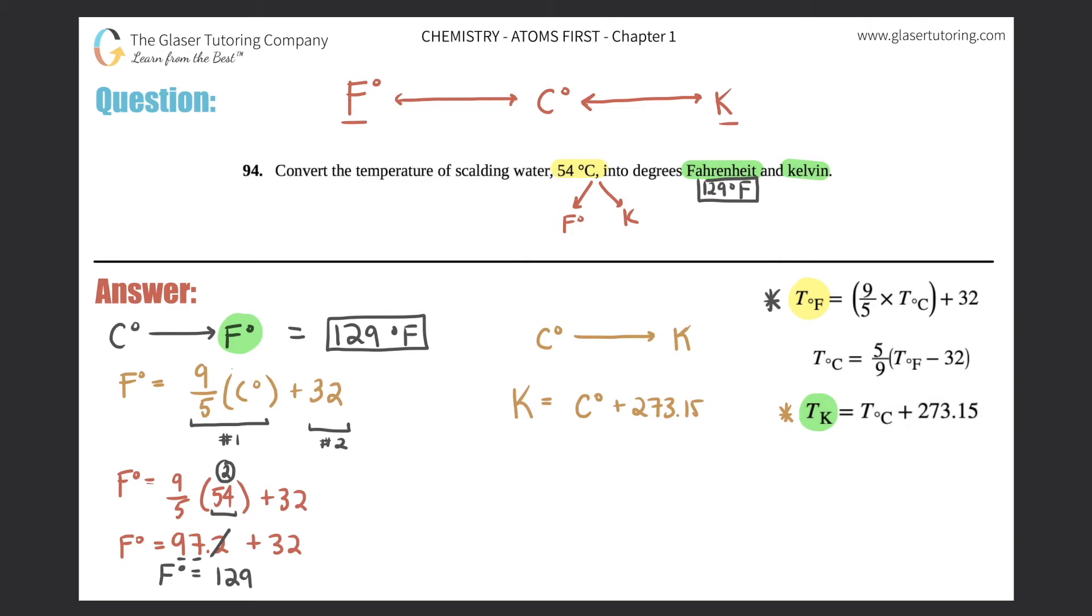So here we go. We got Kelvin, which is what we want to solve for. 54 plus 273.15.